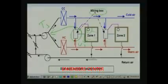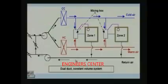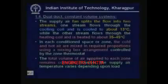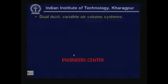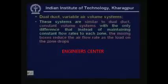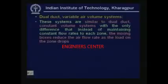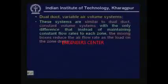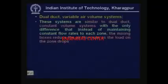The return air is sent back to the system using a return air duct. So this is a dual duct constant volume system. We can also have a dual duct variable air volume system. As the name implies, here the temperature is kept constant but the volume is varied. These systems are similar to dual duct constant volume systems, with the only difference that instead of maintaining constant flow rates to each zone, the mixing boxes reduce the air flow rate as the load on the zone drops.